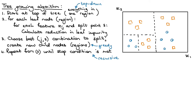Let's say we've run the algorithm for a few steps on this training dataset. It's a binary classification task — we just have two classes, the orange class and the blue class, with two features x1 and x2. The algorithm first decided to split the input region into two regions, then it split one region into a top part and a bottom part, and then split the bottom part again. I haven't explained how we split the regions, but that's what I will do now.